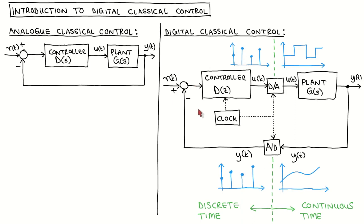This means that signals are only defined at sampling instances. In a digital processor, the sampling period, and therefore the occurrence of the sampling instance, is typically determined by the combination of the processor clock. The continuous time plant output is sampled by an analog-to-digital converter, producing a discrete time signal. This is subtracted from the discrete time reference signal, and the result is fed into a digital controller. The discrete time output signal of the controller is converted to the continuous time domain using a digital-to-analog converter.